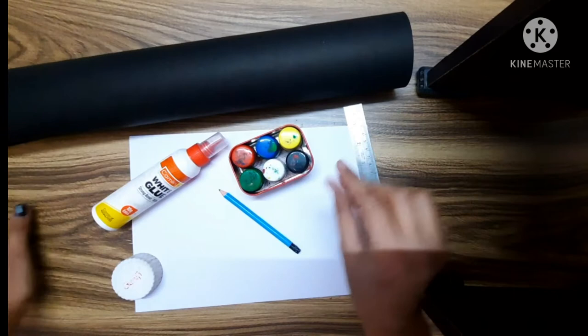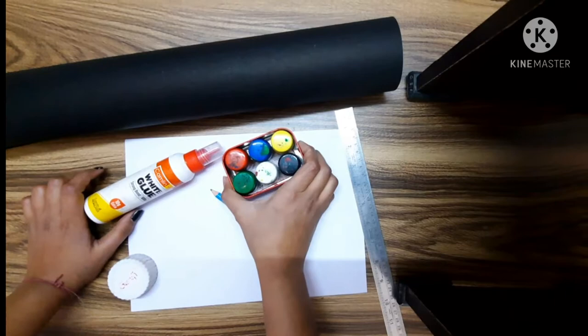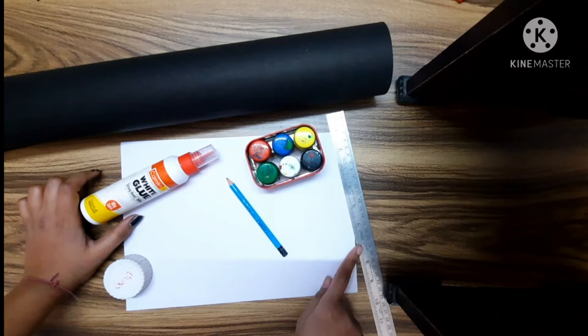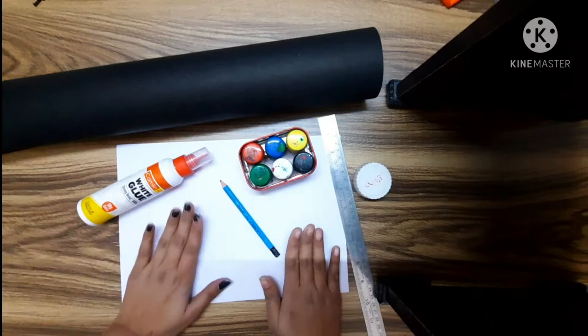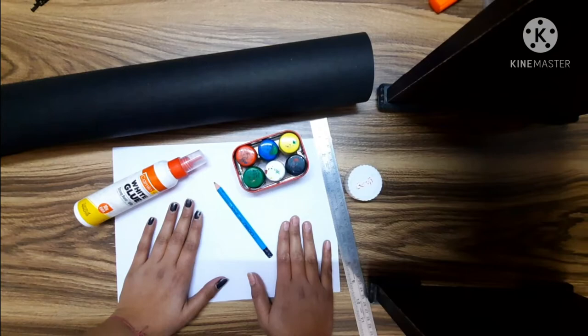So first let us see what are the things that we require: a black colored chart paper, if possible thick chart paper, white glue or Fevicol, few paint colors or crayons, a pencil, a scale, any circular object like this bottle cap, and white colored paper.